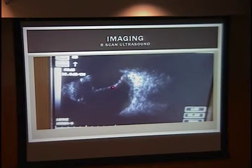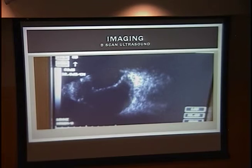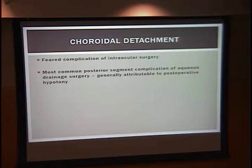This is the image from the night he presented. You can see a dome-shaped echolucent elevation, and there was actually an appositional dome-shaped elevation as well. So he had a choroidal effusion. Choroidal detachment is a feared complication of intraocular surgery, and it's the most common posterior segment complication of aqueous drainage surgery, generally attributable to postoperative hypotony.